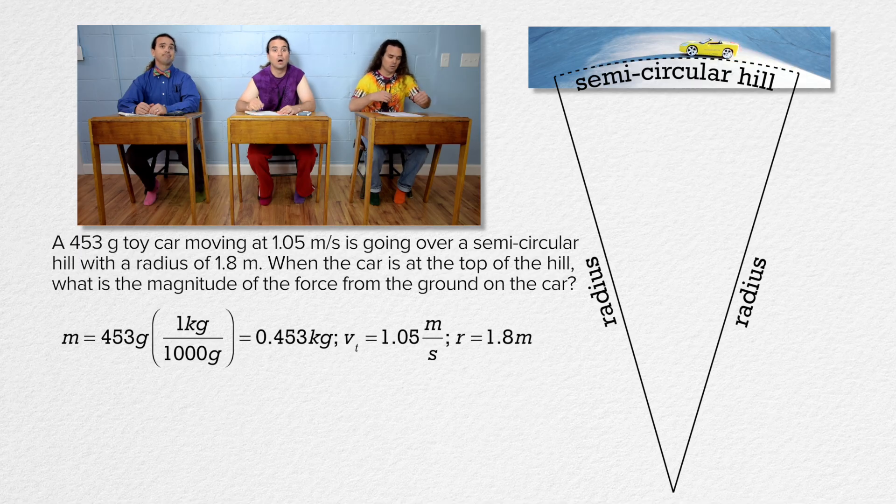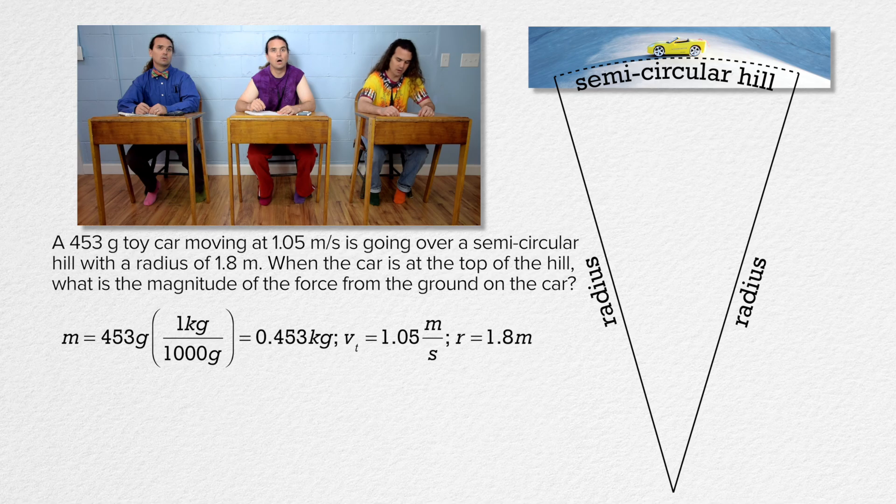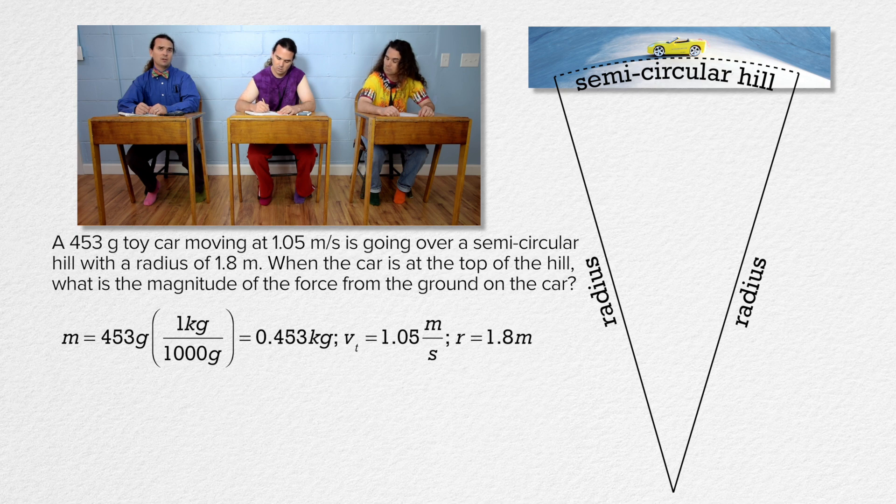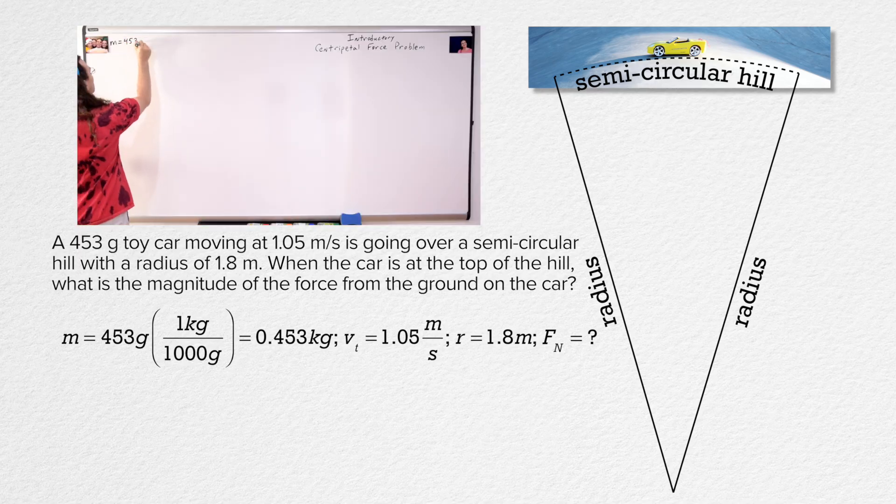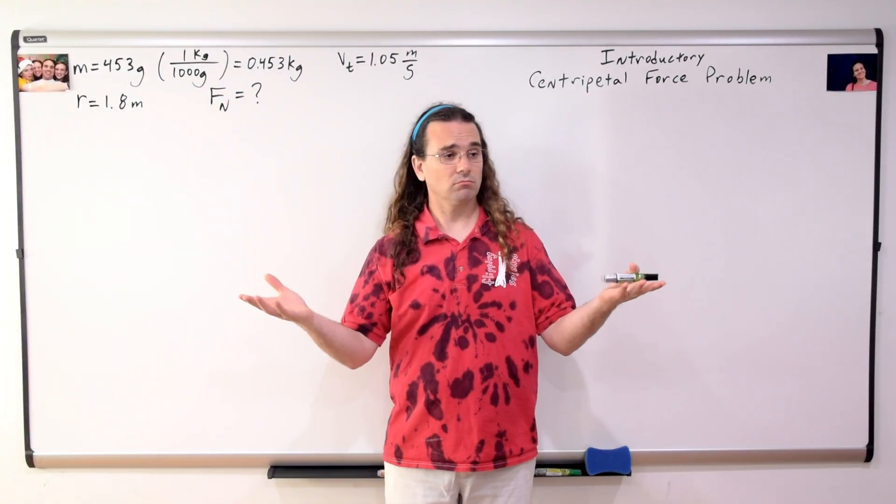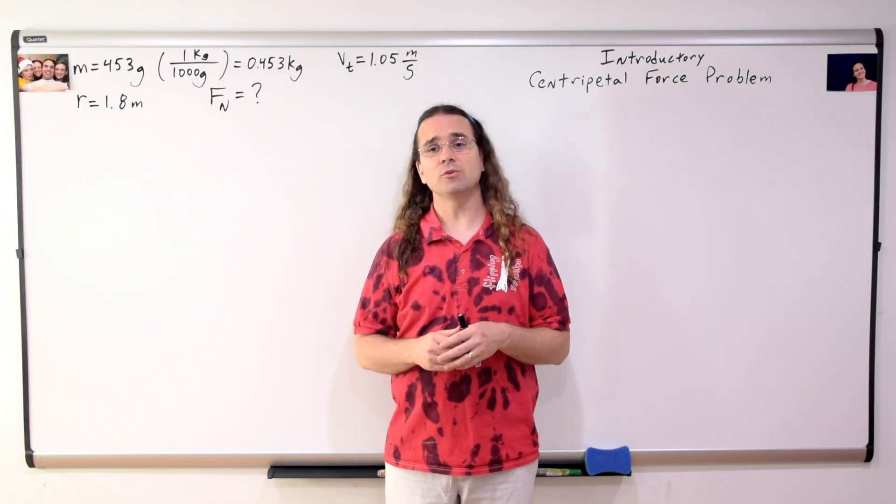Bo? When the car is at the top of the hill, what is the magnitude of the force from the ground on the car? The force from the ground on the car is the force normal. So, force normal equals question mark. Great. Bobby, what do we do next?